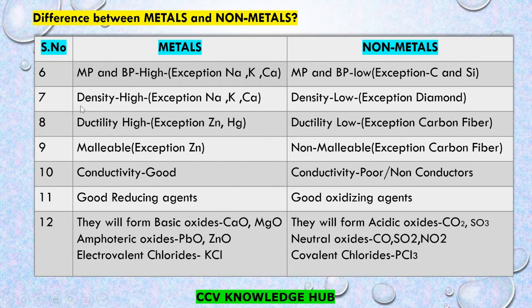Metals have high density. Here is an exception: sodium, potassium and calcium have low density. Non-metals have low density. Here is also an exception: diamond has high density.